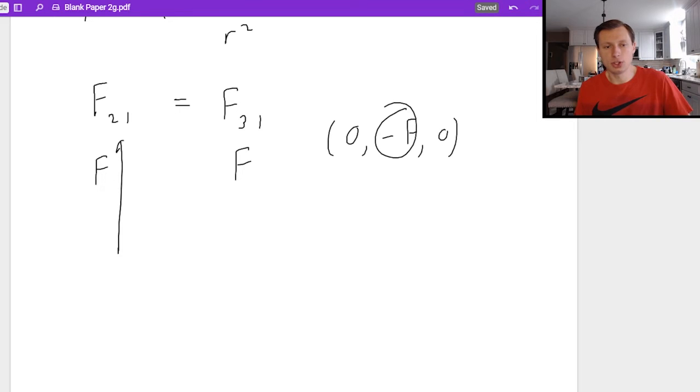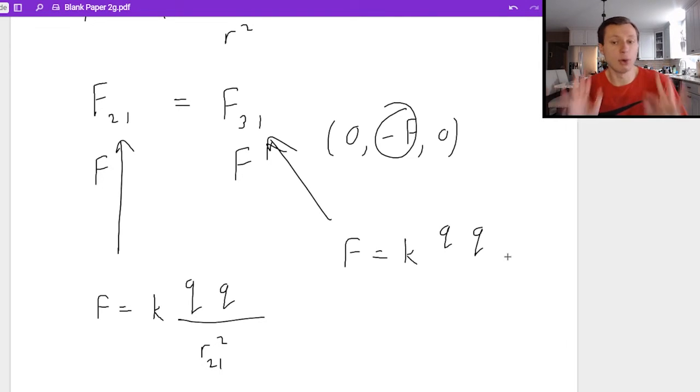So first, let's find f21, that's going to be force equals k, q1, which we can actually just call positive q, because that's why I said the value was. q2 is also positive q divided by some radius squared. And I'm going to call this radius radius two one, because it's the distance between two and one. Then for force three one, that is equal to k q times q, because again, both charges are positive q, divided by radius three one, the distance between charges three and one, and that's squared.